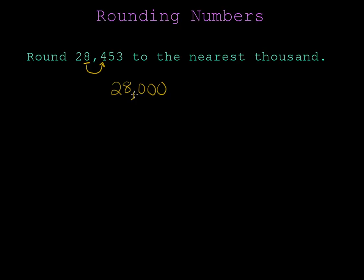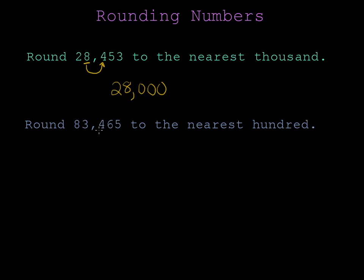Let's try another example. Round 83,465 to the nearest hundred. This time I should underline the digit in the hundreds place, which is the 4. Now, I'll draw an arrow to my next number, the 6.